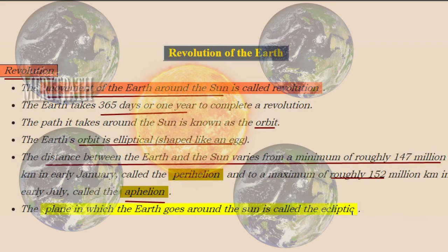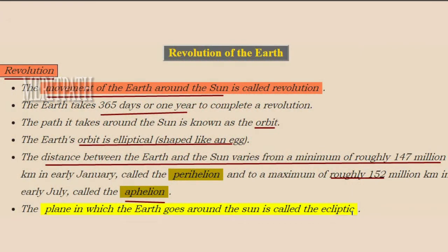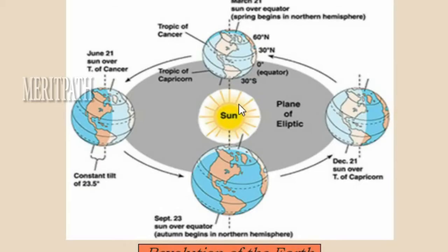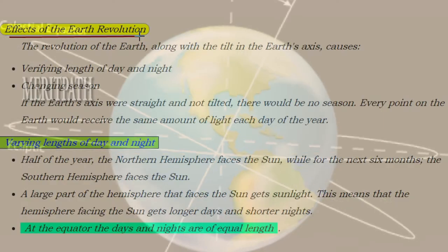In this image, students, you can see the revolution of the earth — the earth revolving around the sun in an oval-shaped orbital path.